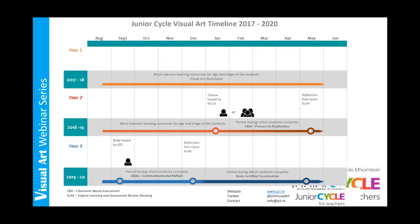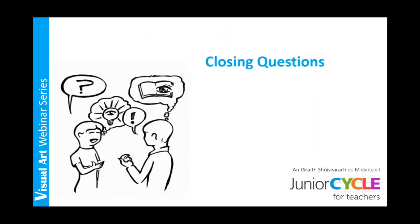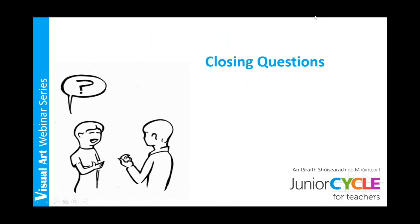You might remember this timeline from our workshops. Here is an overview of the three years for junior cycle visual art. This timeline can be accessed on JCT.ie also. With first years, you are selecting the most relevant learning outcomes for the age and stage of your students, and we would suggest selecting a small number first. The beginning of second year is the exact same as first year — again selecting the most relevant learning outcomes, hopefully building on the prior knowledge built up in first year. After Christmas in second year is when CBA 1 takes place. We will be supporting you further with a full webinar dedicated to Classroom-Based Assessment 1 in early autumn next year.